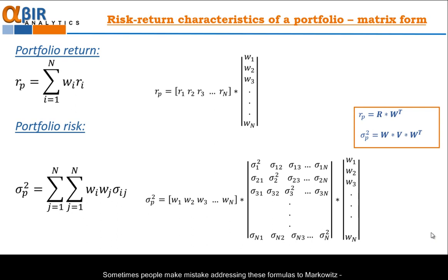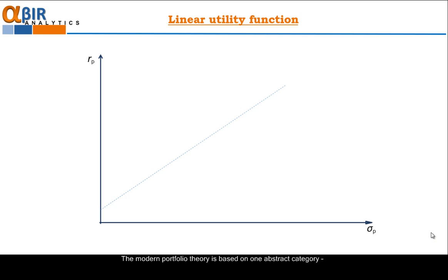Sometimes people make mistake addressing these formulas to Markowitz, the father of the modern portfolio theory. Actually, these formulas are not modern portfolio theory. They are part of normal statistical calculus. However, the real Markowitz genius has been demonstrated in delivering the theory which explains where on the efficient frontier an investor should locate his or her portfolio. The modern portfolio theory is based on one abstract category: utility. Utility presents our satisfaction from investments. We invest because we expect return. Everybody of us knows that higher return gives us higher satisfaction. Therefore, higher utility.